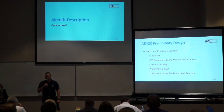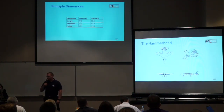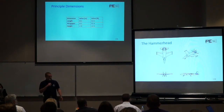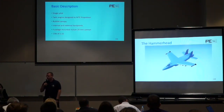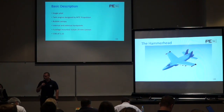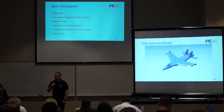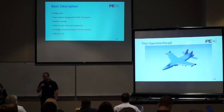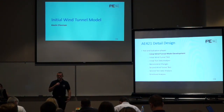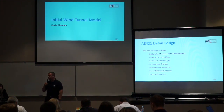For a brief aircraft description, the principal dimensions are on the primary screen and a preview of the aircraft is on the secondary screen. Also on the table is our wind tunnel model of the Hammerhead. The aircraft is a single-pilot, twin-engine airplane. The engines were designed by the ME capstone propulsion group. The airplane has a bubble canopy, internal and external weapons carriage capacity, a fuselage-mounted M61 Vulcan, and a thrust-to-weight ratio of 1.2, thanks to the ME propulsion group. Kevin Klerner will now present the initial wind tunnel model.